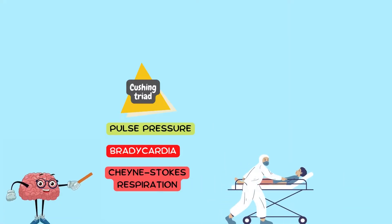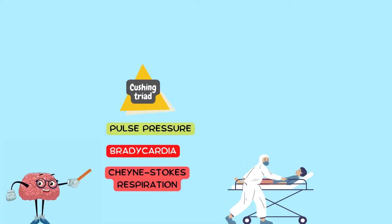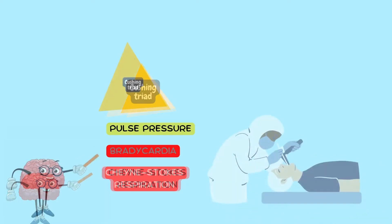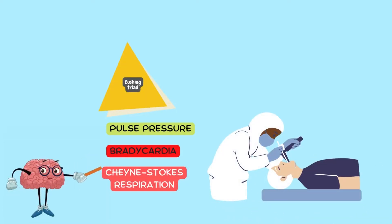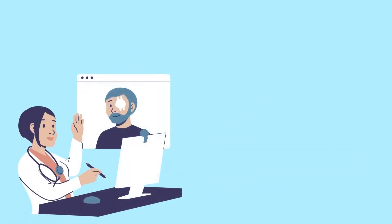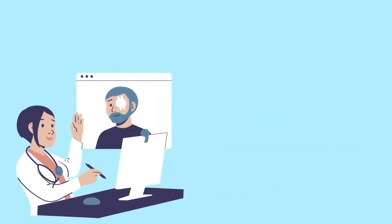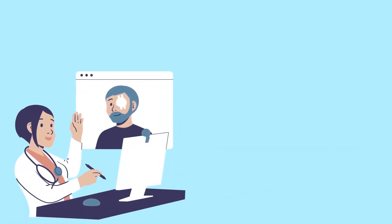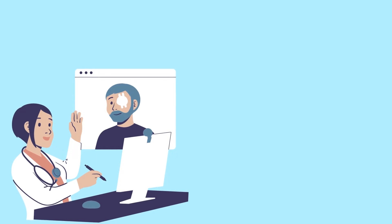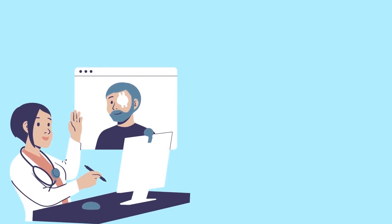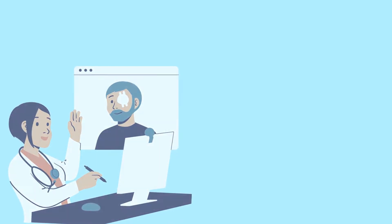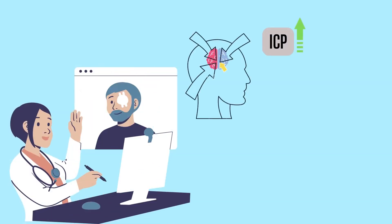In this video, we will look at each component of Cushing reflex along with its clinical significance and management of the patient in an emergency care unit. In patients with acute hematoma, stroke, tumor, or basically swelling of the brain, there will be increased intracranial pressure.